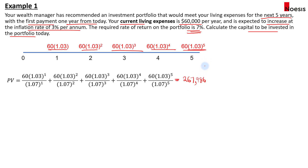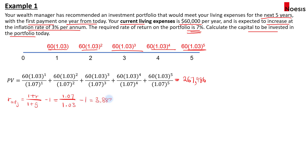Now let's use the adjusted rate approach. To calculate the adjusted rate, we take (1+R)/(1+G) minus 1, which is 1.07 divided by 1.03 minus 1. That gives us approximately 3.883495%. With this adjusted discount rate, we can now input it directly into the financial calculator.